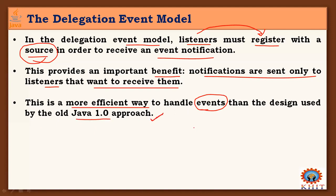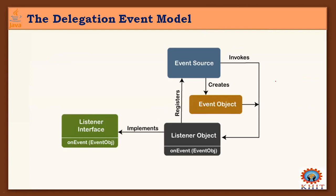Most modern Java programs mainly use this delegation event model. In the general model lifecycle: there is an event source that creates event objects. Those objects may be received by listener objects that are registered with that source. They receive events generated by the source and implement listener interfaces to handle those events appropriately based on the methods defined in that listener interface. It is a very simple process.